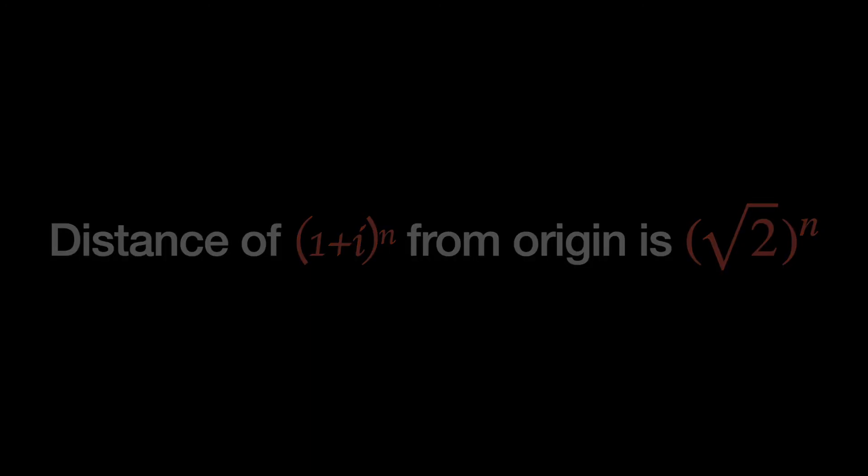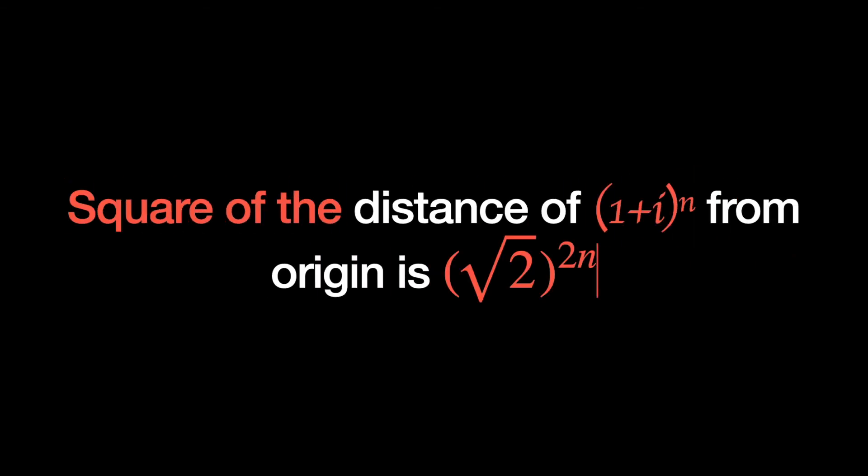If we want to find the square of the distance of (1 + i)ⁿ from the origin, that's (√2)ⁿ squared, which gives us the final answer: simply 2ⁿ. So this problem involves both algebraic manipulation and geometric intuition — it's a very beautiful problem.